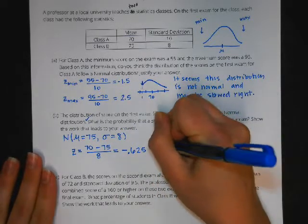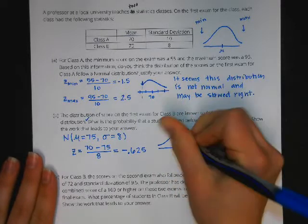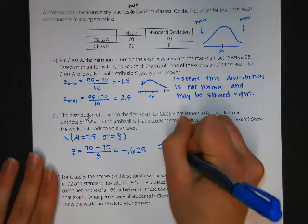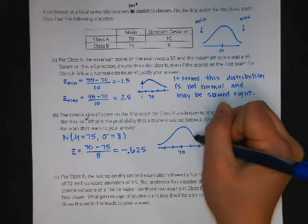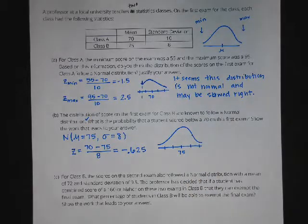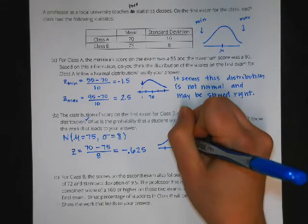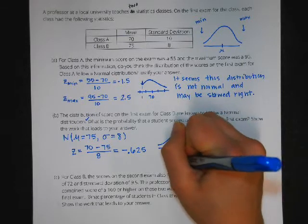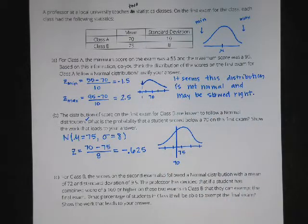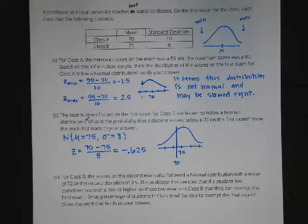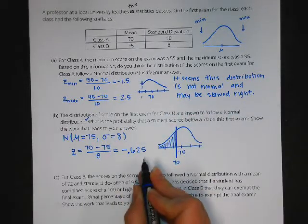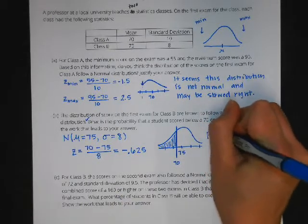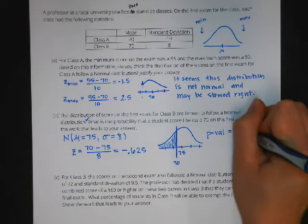If I'm looking at this on a distribution for my normal curve, here's 75. I draw in my standard deviations. 70 is going to be located on my number line here, not quite one standard deviation below but a little more than half a standard deviation below the mean. If I look at my z-chart and look up negative 0.63, I get that p-value of 0.2660.